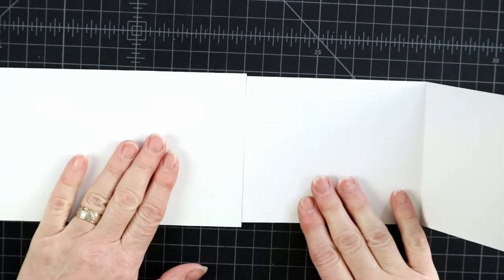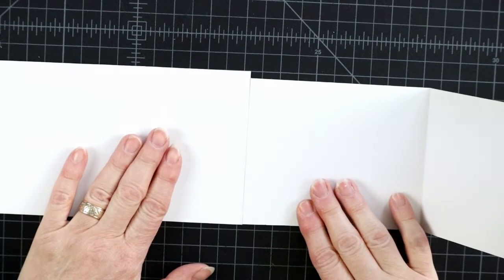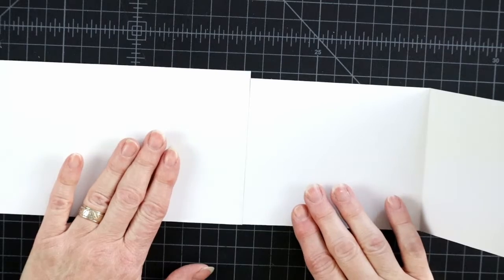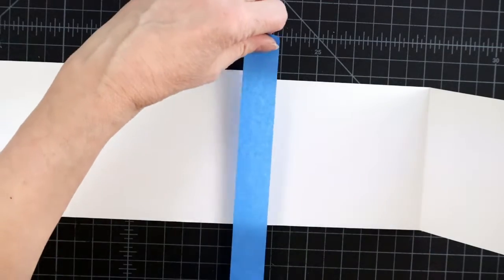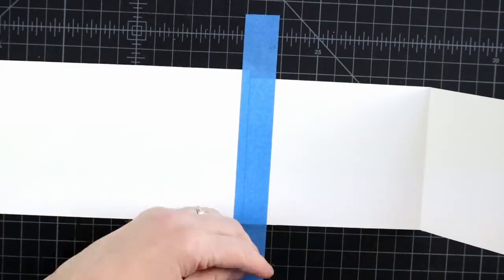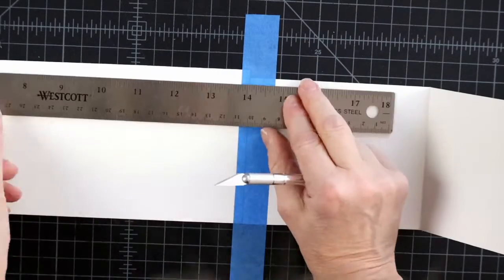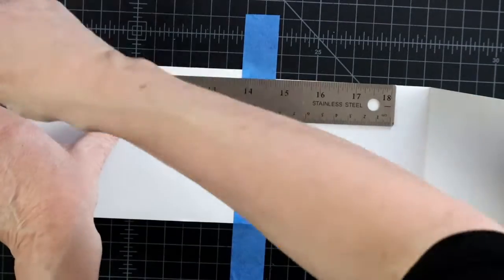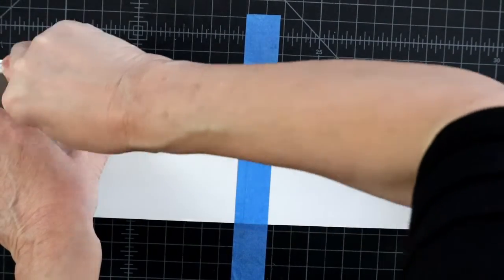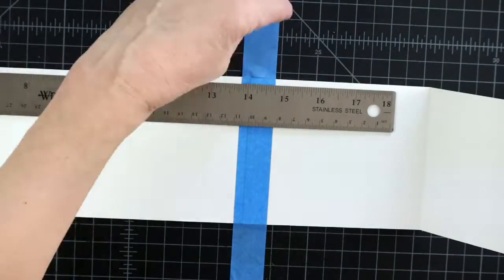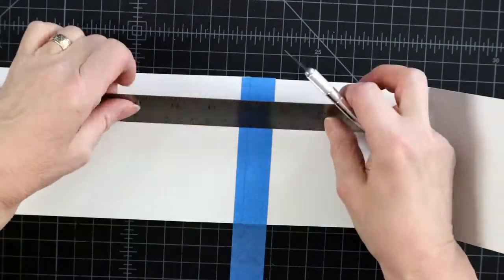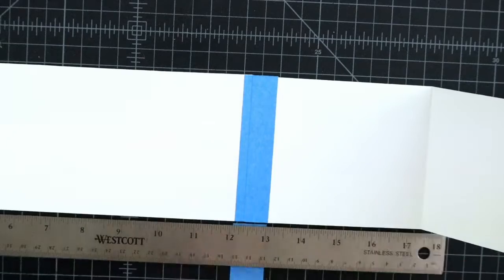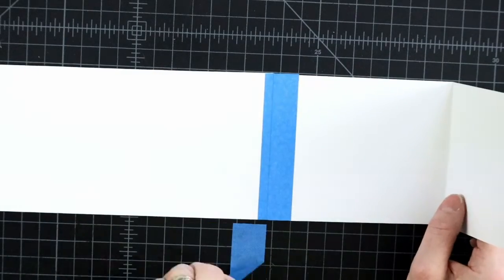Then, we'll stick the other side of the cardboard strip to the bottom of this contraption. Looks like I need to trim it a bit more to make it the same size. It would help if I measured accurately in the first place.